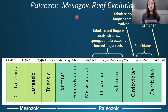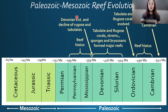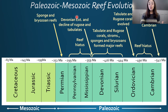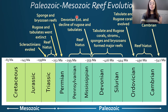The Devonian extinction severely decimated rugose and tabulate corals, causing another reef hiatus in the Carboniferous — Mississippian and Pennsylvanian periods — because they could no longer form major reefs. During the Permian, some sponges and bryozoans began building reefs again. Then tabulate and rugose corals finally went extinct at the end-Permian extinction, causing yet another reef hiatus from the end Permian through the middle Triassic.